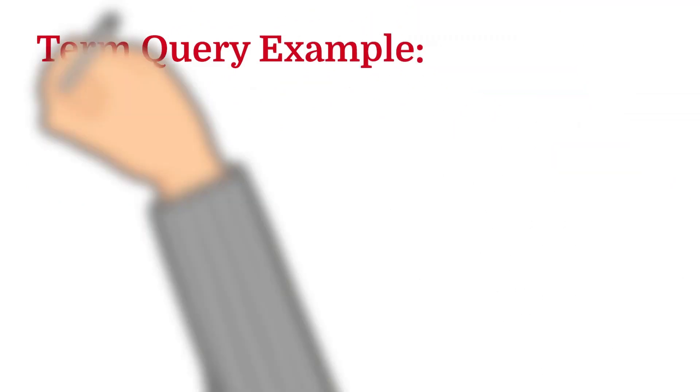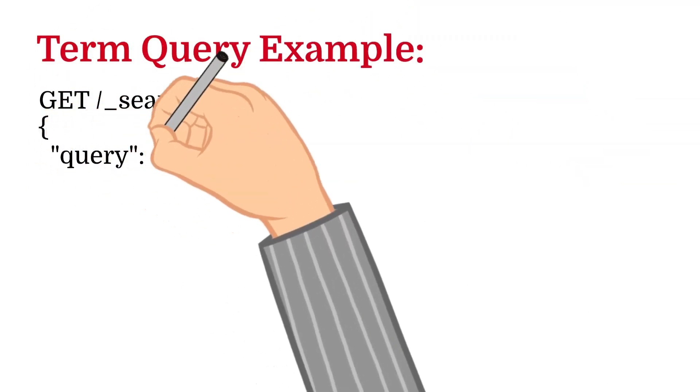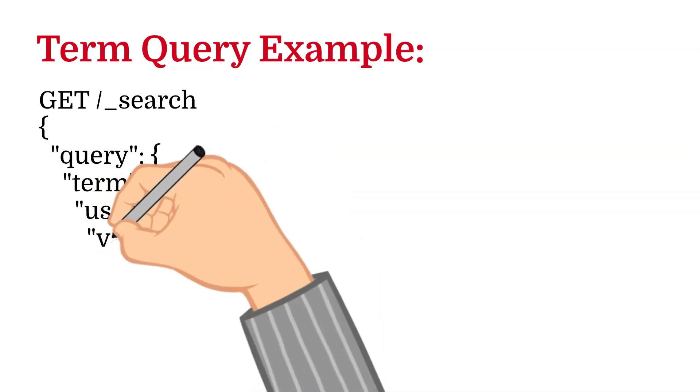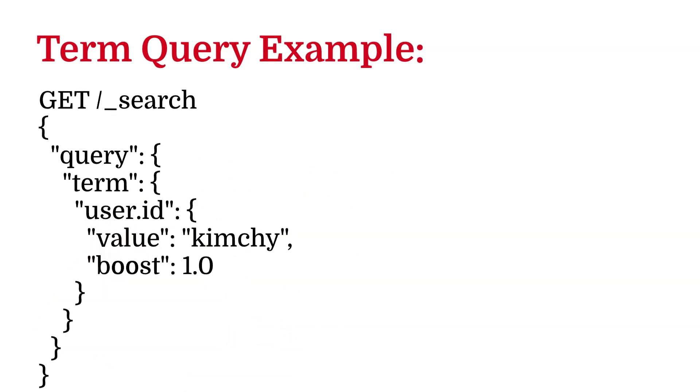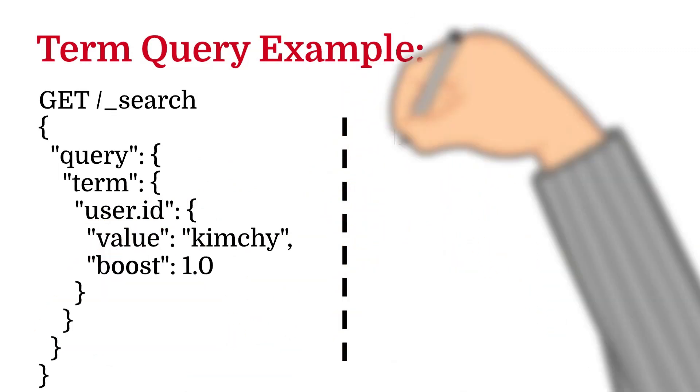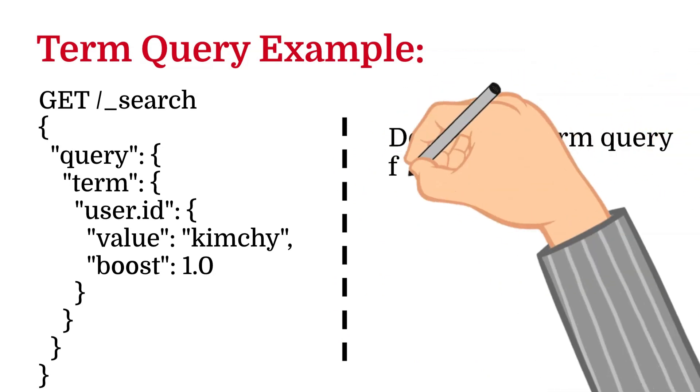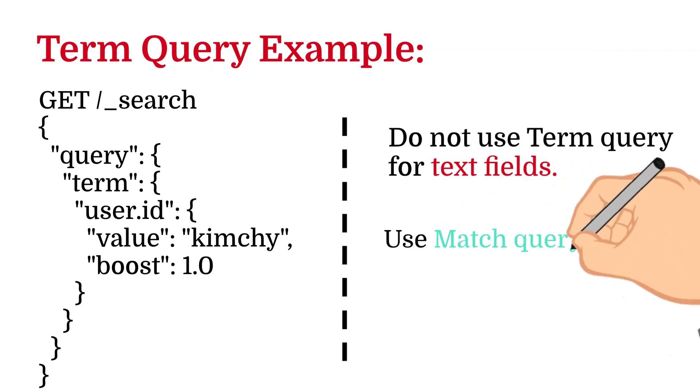Let's move ahead and check out the term query. Term query returns documents that match an exact term provided in the search field. Do not use term query for text fields. By default, Elasticsearch changes the values of text fields as part of analysis. This can make finding exact matches for text values very difficult. Use the term query to match fields such as a price, product ID, a username, etc. Use match query for text fields instead of using term queries.